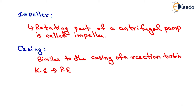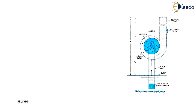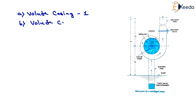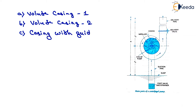The following three types of casing are commonly adopted. The first one is volute casing type 1, the second one is volute casing type 2, and the last one is casing with guide blades. We will start with the volute casing type 1.